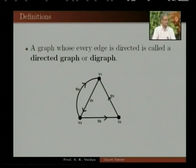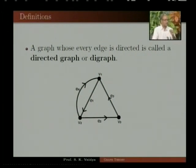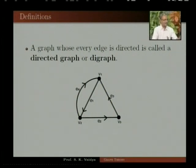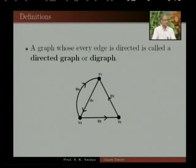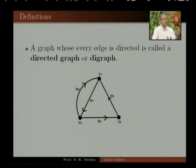This is a digraph on three vertices and four edges. E1 and E4 are multi-arcs. Edge E1 is directed from V1 to V2, edge E2 is directed from V2 to V1, and edge E4 is also directed from V2 to V1.